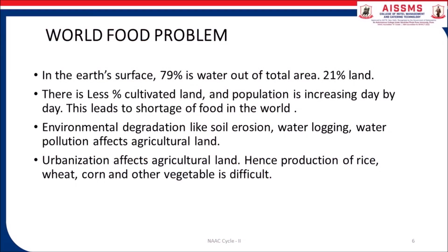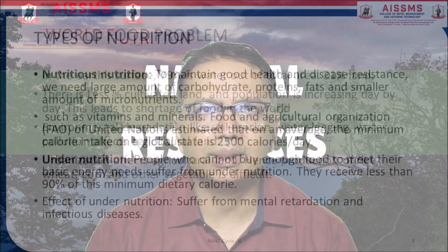Let us understand what are the problems of food in the world. On the earth's surface, 79% is water out of total area, where 21% is land. There is less percent cultivated land and population is increasing day by day in the world. This leads to shortage of food. Environmental degradation like soil erosion, water lodging, and water pollution affects agricultural land. Urbanization affects agricultural land. Hence, production of rice, wheat, corn and other vegetables is difficult.